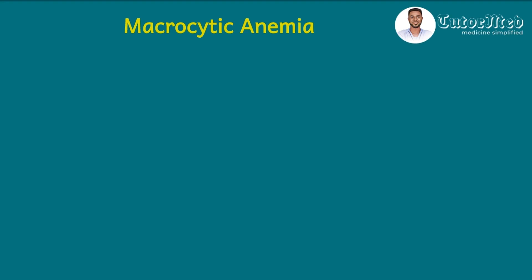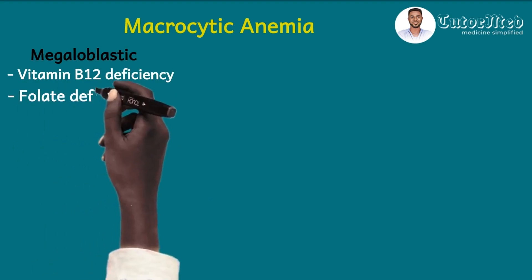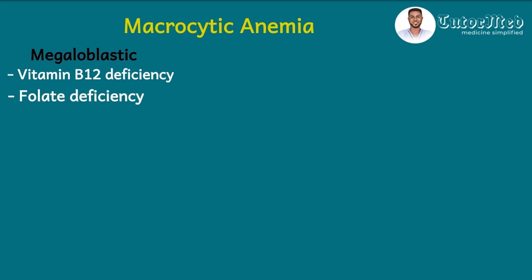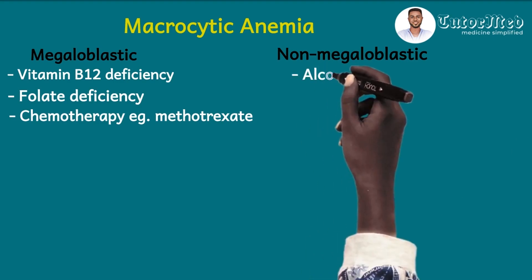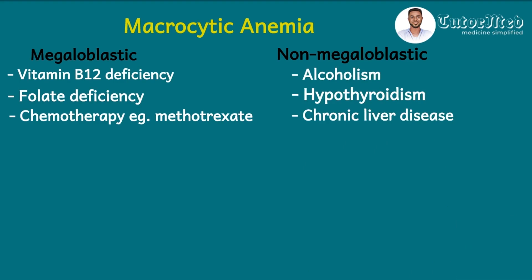Before we get to the ODQ, let's look at the likely causes of this patient's condition. For macrocytic anemia, it could be megaloblastic or non-megaloblastic. For the megaloblastic type, the causes are vitamin B12 deficiency, folate deficiency — note that folate is the same as vitamin B9, so if you see vitamin B9 in the exam they are the same thing — and chemotherapeutic drugs like methotrexate. For non-megaloblastic anemia, we have alcoholism, hypothyroidism, and chronic liver disease, just to mention a few.